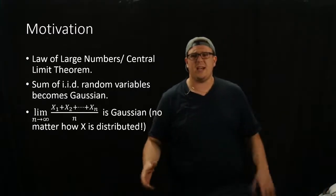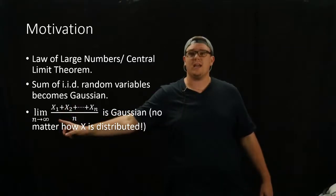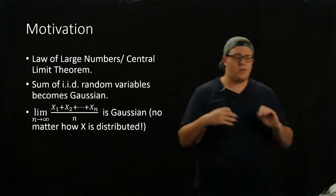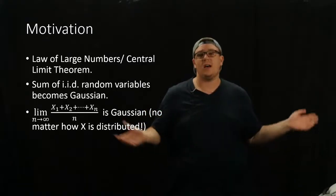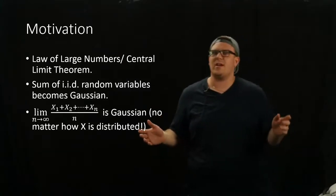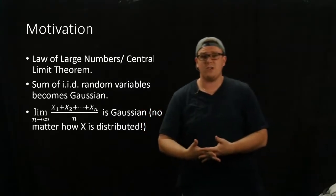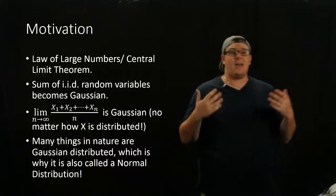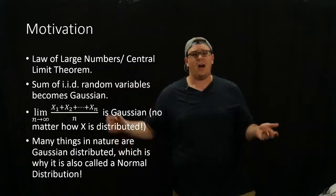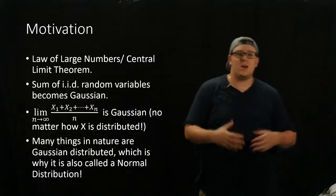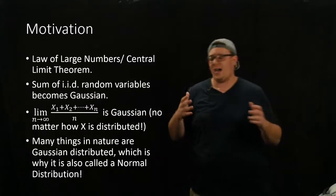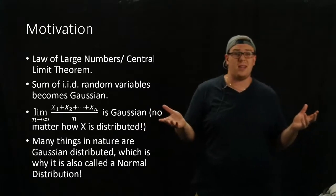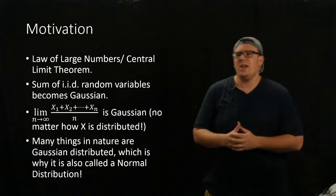More explicitly, we have that the limit as n goes to infinity of the sum of x₁, x₂, …, xₙ, all divided by the number of variables that you take, ends up being Gaussian. And that is true no matter what kind of distribution you use. So if you take an exponential distribution or a uniform distribution, you will end up with a Gaussian, as long as it has infinite support. And that will be centered at the mean and variance of a single random variable in this sequence.